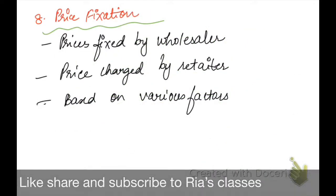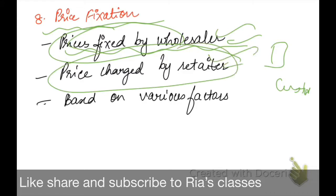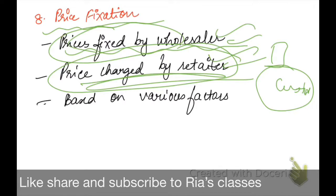The final function is price fixation. Jo bhi prices hota hai goods ka, price sara wholesaler fix karta hai. The ultimate price that the customer pays will depend upon the price fixed by the wholesaler as well as the price charged by the retailer — wholesaler ka price plus retailer ka profit margin. Various factors like competitors, the price at which they are selling goods, and the nature of demand are all considered by the wholesaler while fixing the price of goods.